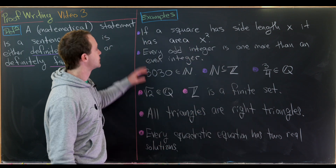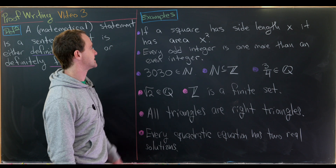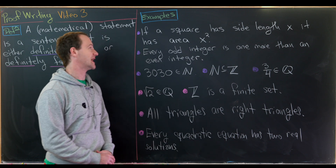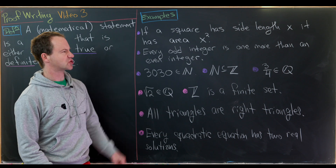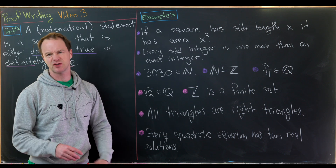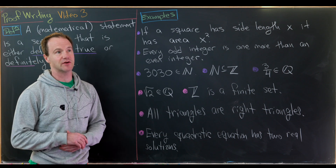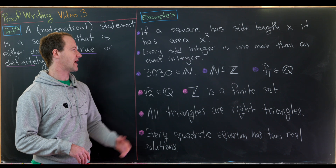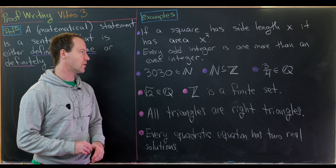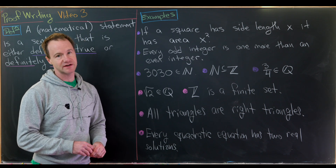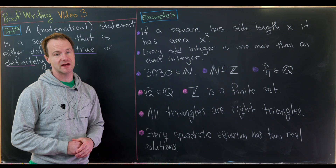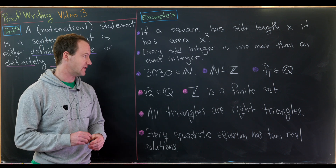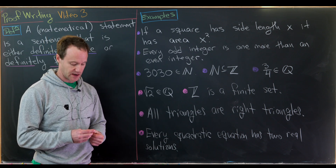Let's look at some examples. The first: if a square has a side length of x, it has an area of x². That's a true statement just by the standard area formula for a square. Next: every odd integer is one more than an even integer — also a true statement by the simple characterization of even and odd integers.